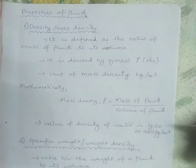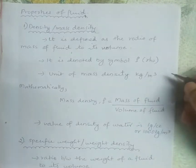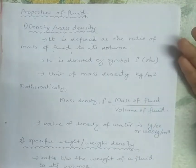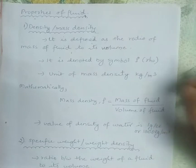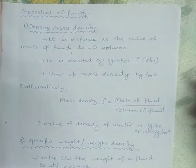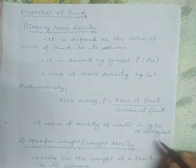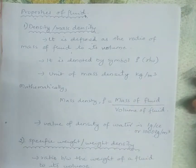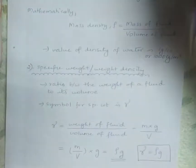It means that when you consider a cuboid having 1 meter by 1 meter by 1 meter and filled with water, then what will be the weight? 1000 kg. So the density of water is equal to 1000 kilogram per meter cube.